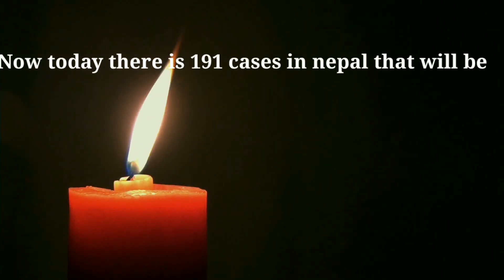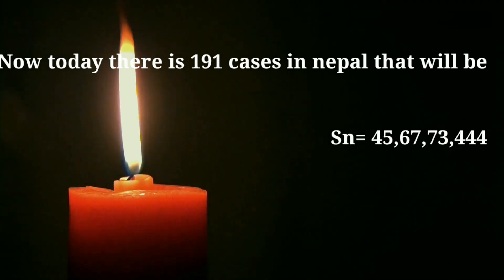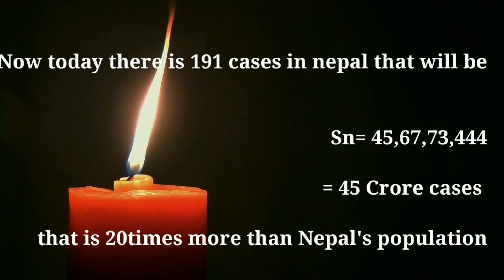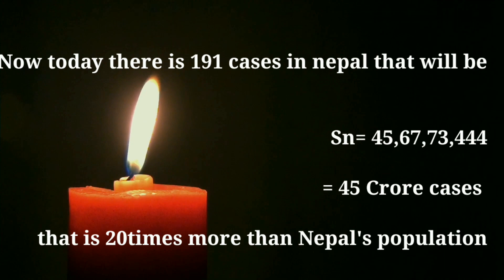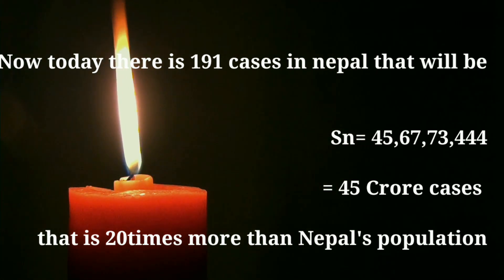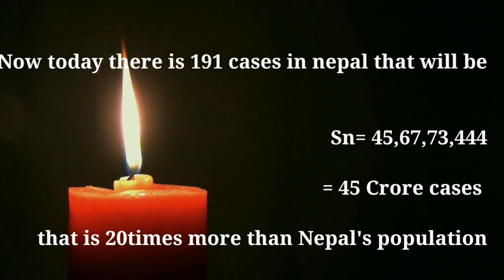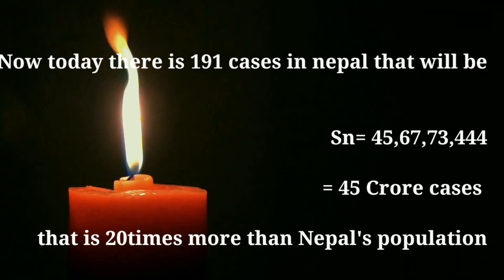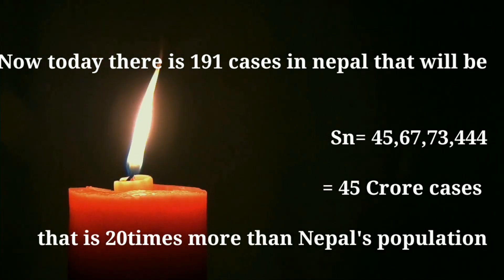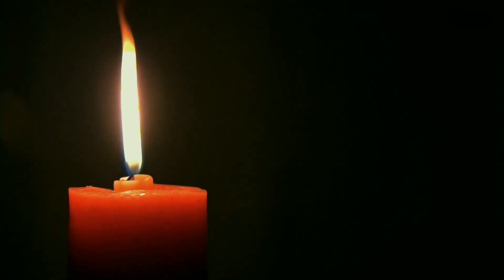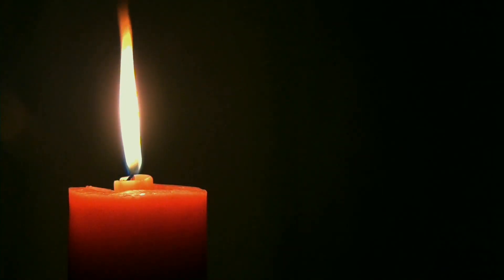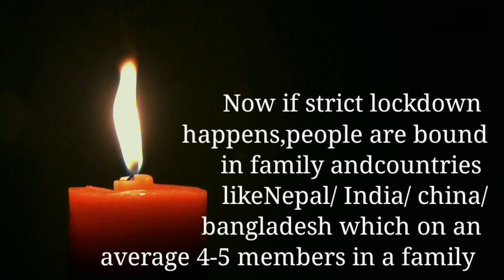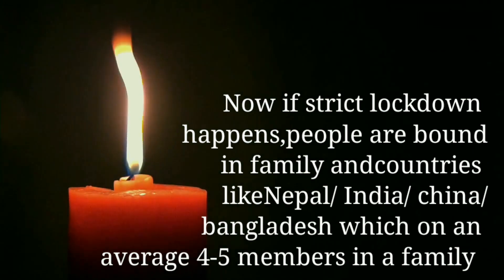By the same formula, as we have 191 cases as of today, the total number of cases in the next 14 days would theoretically be 45 crores — that is 20 times more than Nepal's population. This is practically impossible but theoretically possible. Now let's see how lockdown has been effective in countries like Nepal, India, China, and Bangladesh.